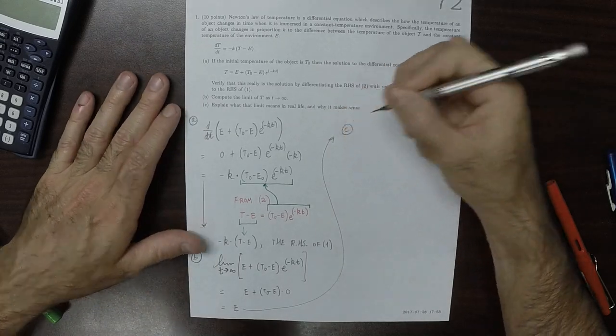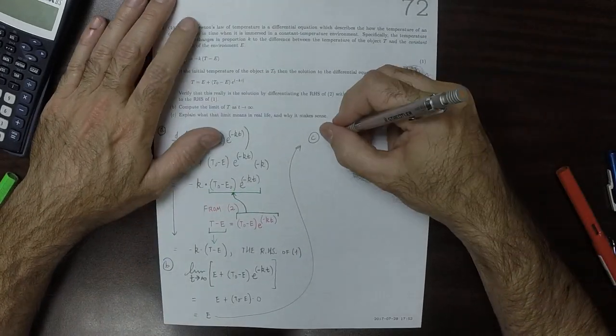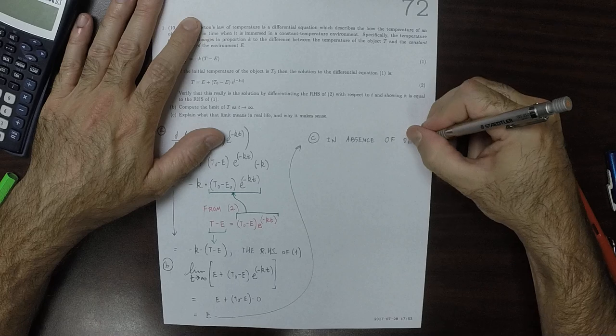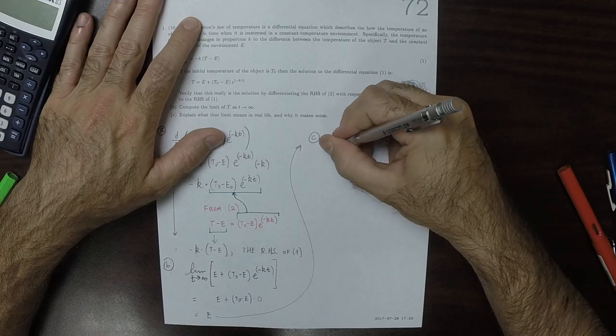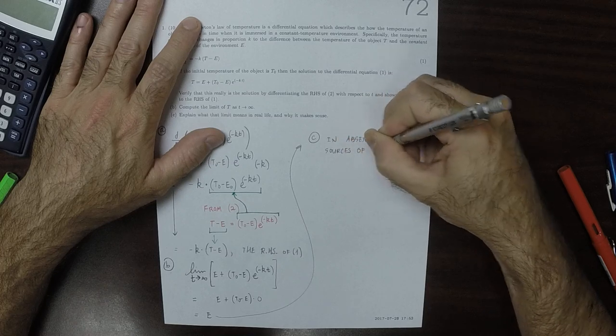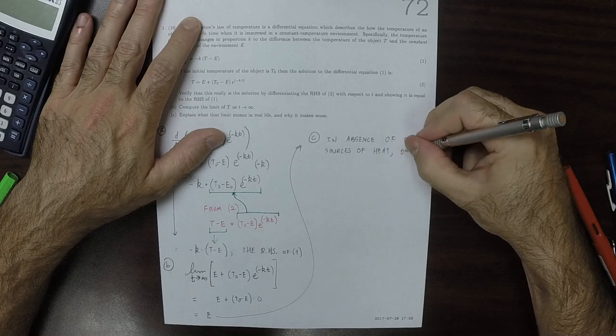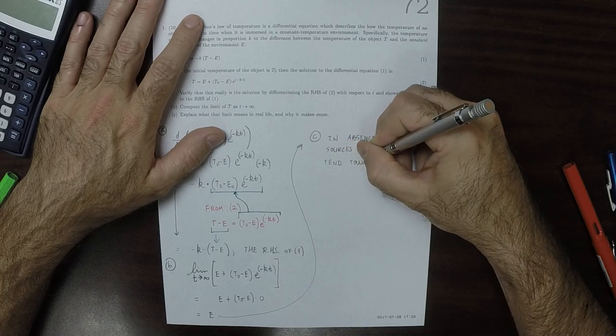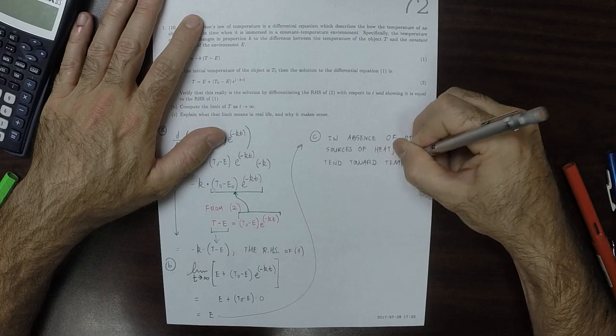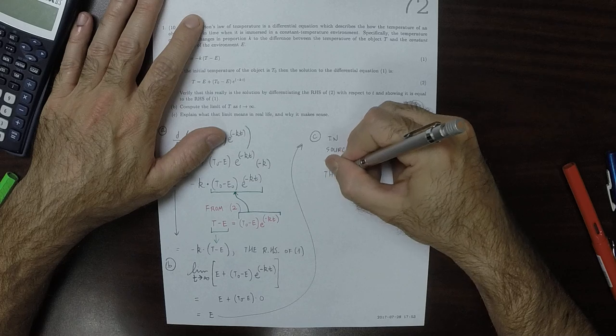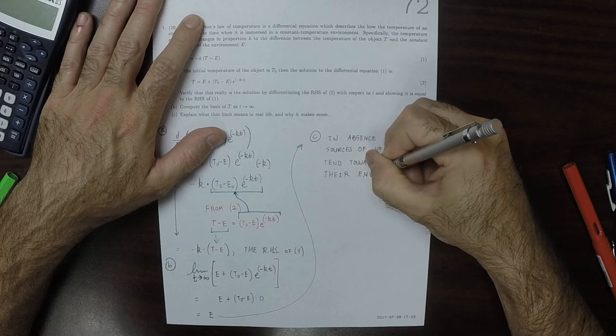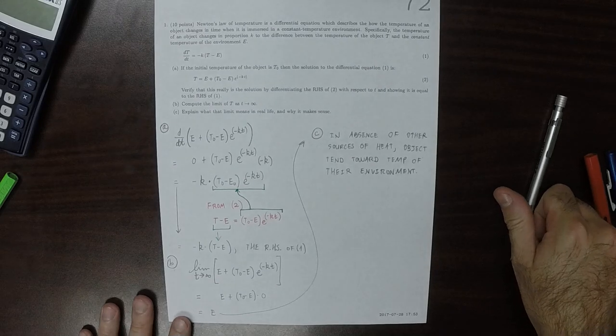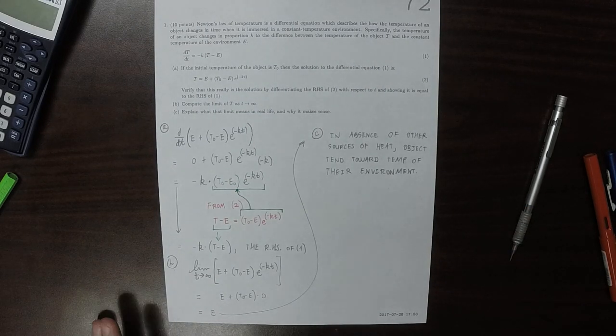Now part c, explain what that means in real life. It means that in the absence of other sources of heat, objects tend toward the temperature of their surroundings, of their environment. And that makes sense, because that's everything that I've ever experienced.